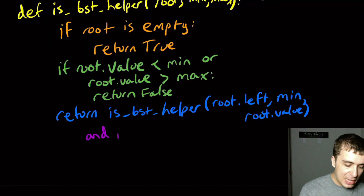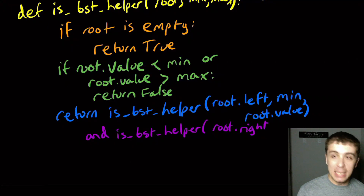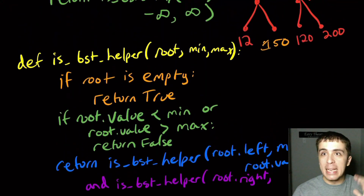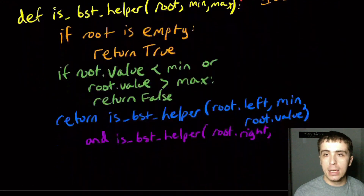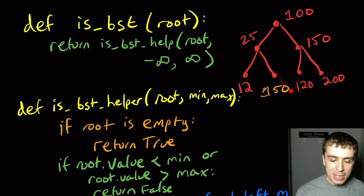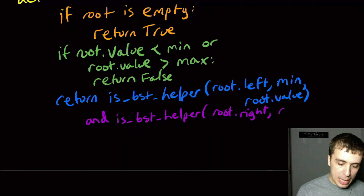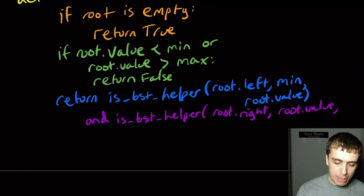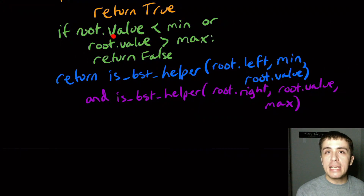And for the right subtree we return isBSTHelper with root.right. If we look at the 100 node, the root on the left is 25 and the root on the right is 150. On the right side, the maximum doesn't change but the minimum becomes root.value. So we pass root.value as the new min and still pass max. We're guaranteed this works because at this point root.value is already confirmed to be between min and max.